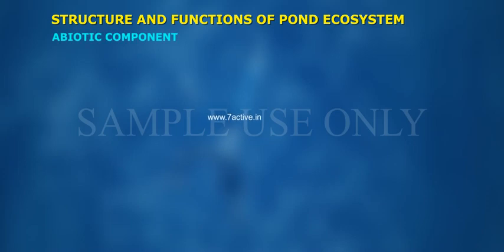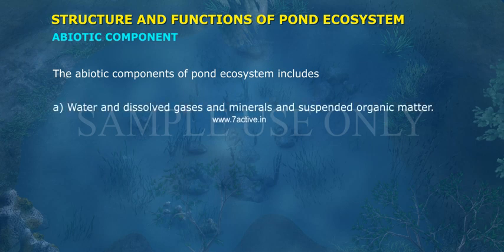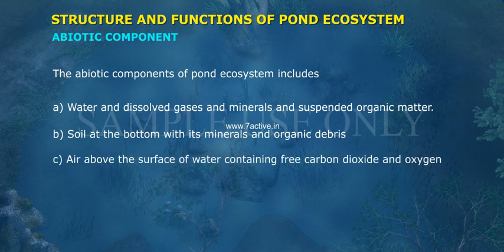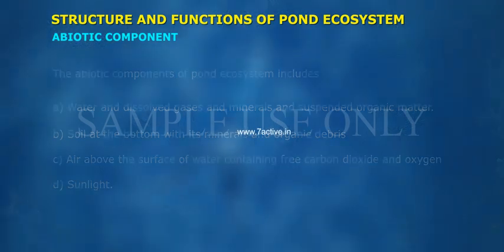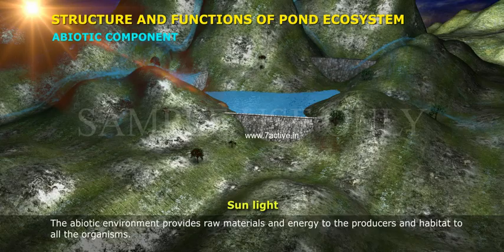Abiotic components of the pond ecosystem include: A. Water and dissolved gases, minerals, and suspended organic matter. B. Soil at the bottom with its minerals and organic debris. C. Air above the surface of water containing free carbon dioxide and oxygen. D. Sunlight. The abiotic environment provides raw materials and energy to the producers and habitat to all the organisms.